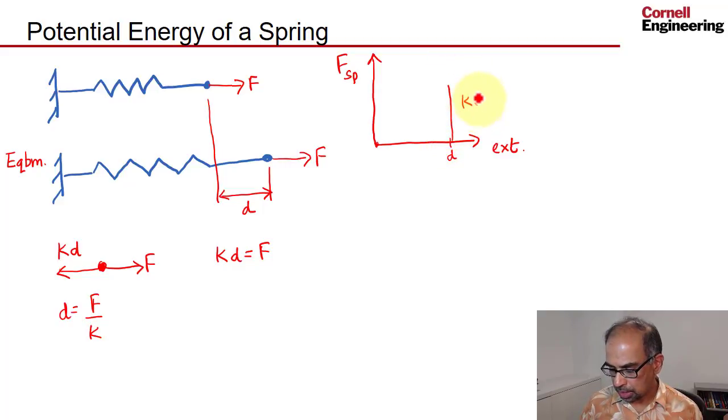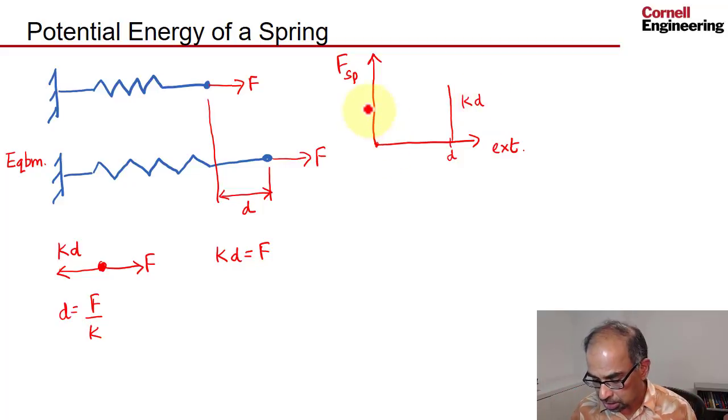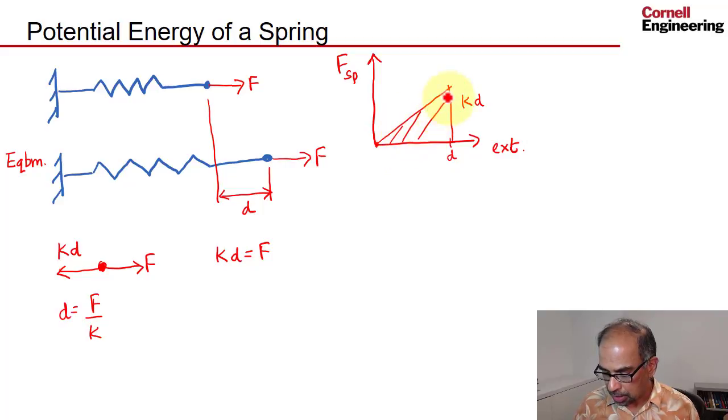Then it gets extended to an amount D, and at that point the force in the spring is K*D. We'll assume that the force in the spring goes from zero to K*D in a linear fashion—these are called linear springs. The area under this force-extension curve gives you the work that you can get out of the spring.